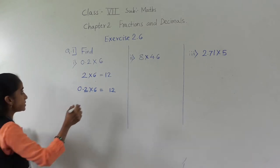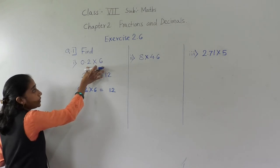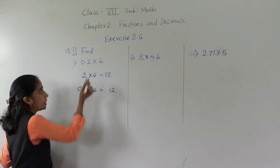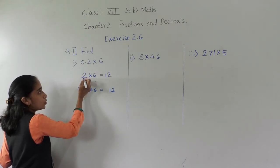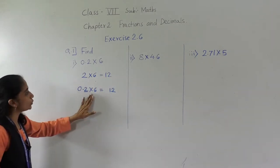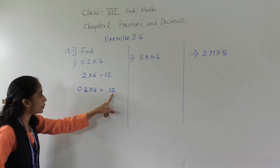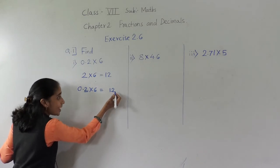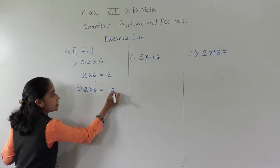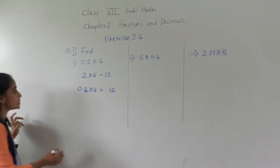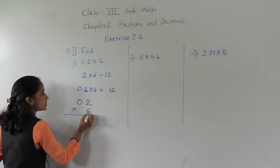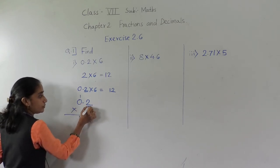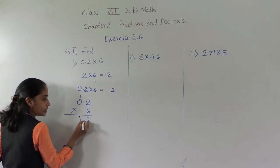Once again I will explain. For 0.2 multiplied by 6, first solve without the decimal point as a simple sum. It was 0 before, so no need to write that zero — 2 multiplied by 6, 2 sixes are 12. Now, for 0.2 multiplied by 6, after the decimal point there is only 1 digit, so from the right-hand side count 1 digit and give the decimal point before it.